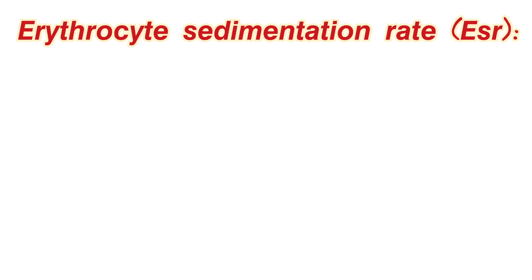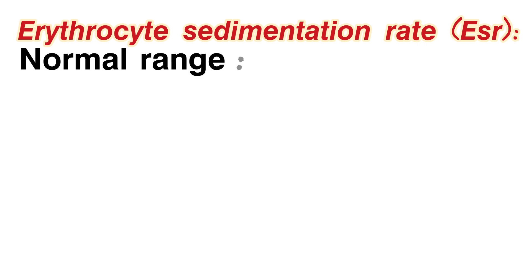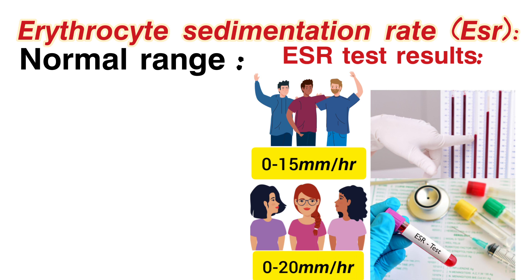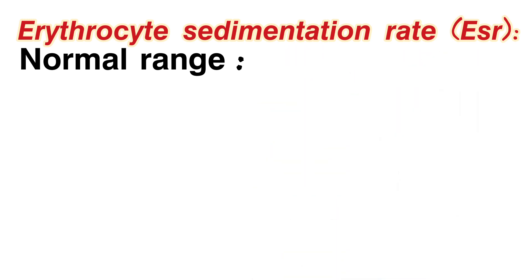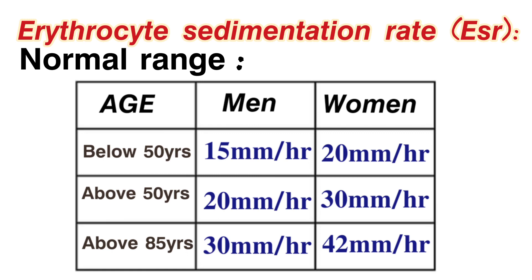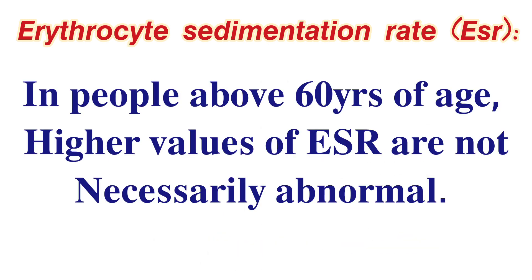The normal range of ESR: men are 0–15 mm per hour, and women are 0–20 mm per hour. Age-wise: below 50 years — men are 15 mm/hr, women are 20 mm/hr. Above 50 years — men are 20 mm/hr, women are 30 mm/hr. Above age 85 — men are 30 mm/hr, women are 42 mm/hr. It is important to consider age when interpreting ESR values.